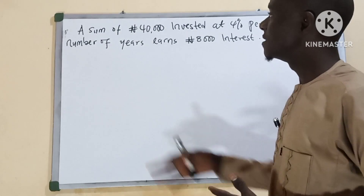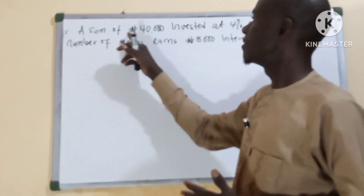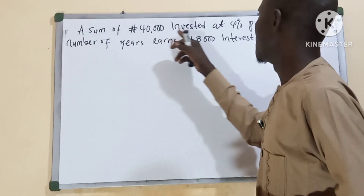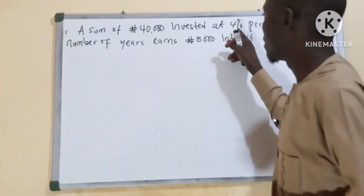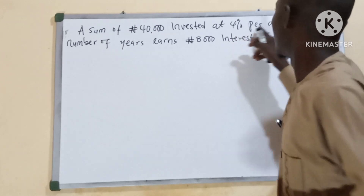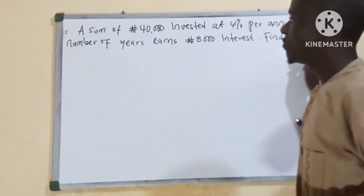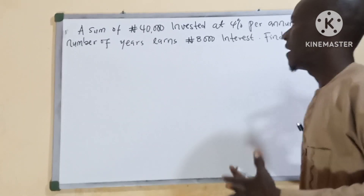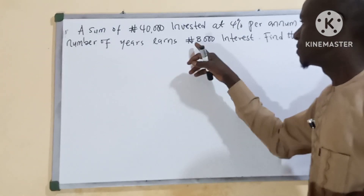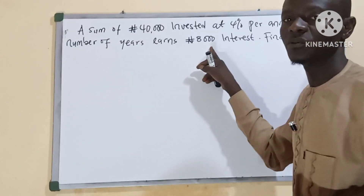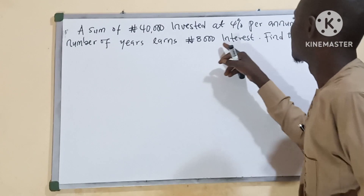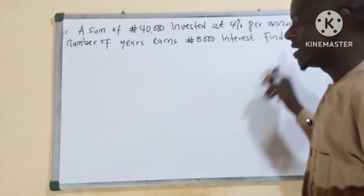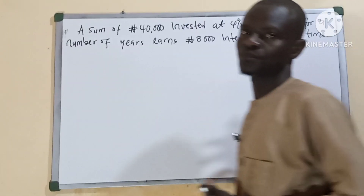The question is: a sum of 40,000 Naira invested at 4% per annum for a number of years gives 8,000 Naira interest.